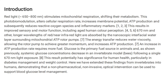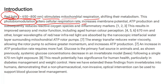In the introduction, the study states that red light stimulates mitochondrial respiration — shifting its metabolism. This is known as photobiomodulation. A lot of people are now using photobiomodulation for many different diseases, including multiple sclerosis, Alzheimer's disease, Parkinson's disease, and even long COVID. Specifically, red light at this wavelength alters cellular respiratory rate, increases membrane potentials, ATP production, and reduces reactive stress and inflammatory markers.